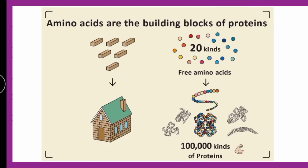Amino acids are the building blocks of protein. Just like various monomers in carbohydrates unite to form polymers like polysaccharides, the same way amino acids are the building blocks of proteins, wherein 20 kinds of free amino acids exist in protein.